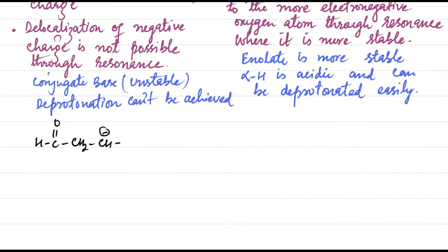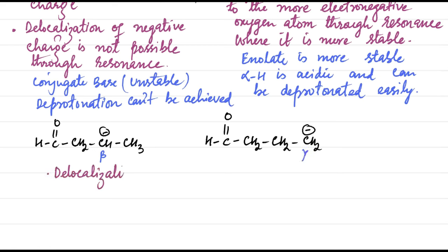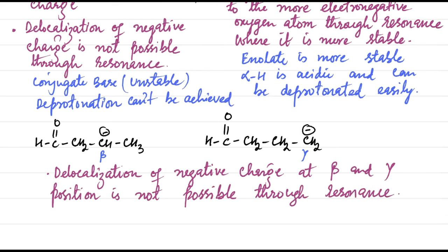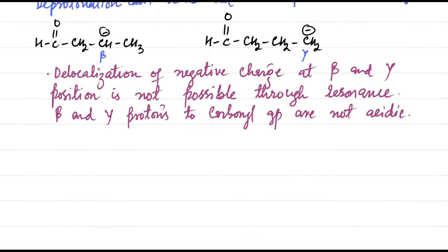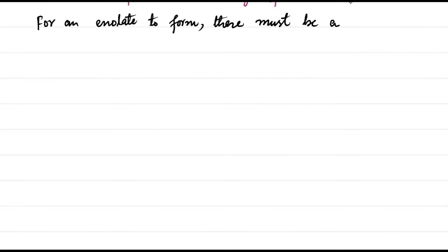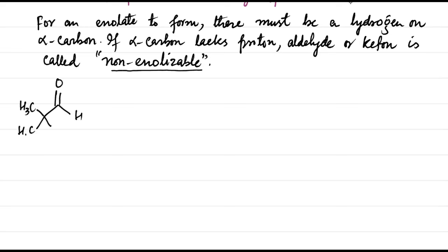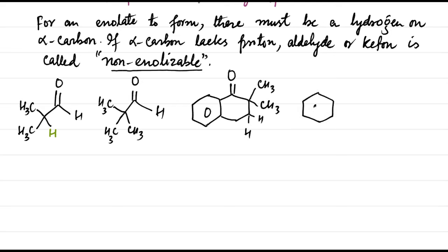Notice that resonance delocalization for a carbanion at the beta and gamma positions is not possible; hence these protons are not acidic. Therefore, in order for an enolate to form, there must be a hydrogen on the alpha carbon. If an aldehyde or ketone lacks a proton on the alpha carbon, we call it non-enolizable. Consider the following carbonyl compounds to see whether they are enolizable or non-enolizable.